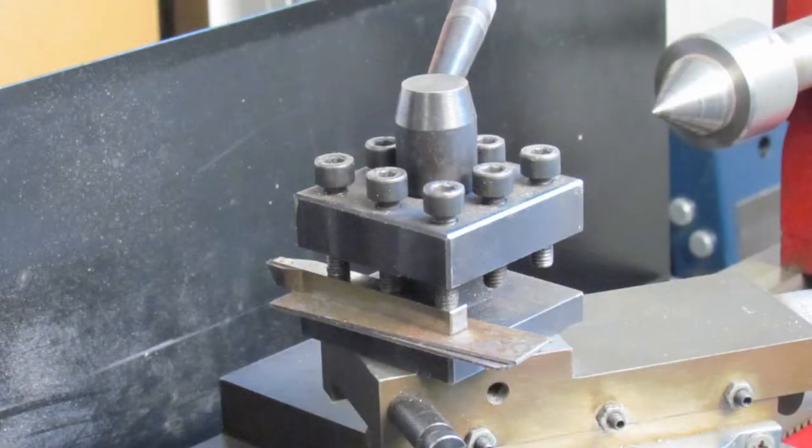This is the tool post my lathe came with. To adjust to the correct cutting height, shims are required. Also, anytime the cutter needs to be changed, all the screws need to be loosened to remove the cutting tool.